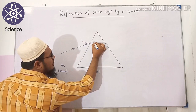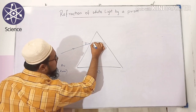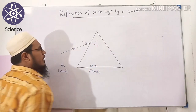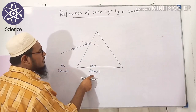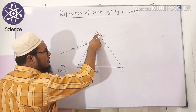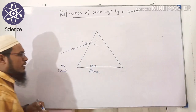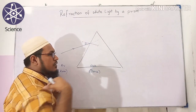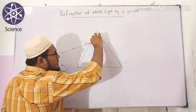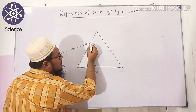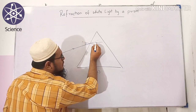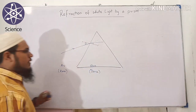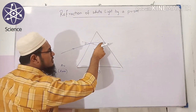If this layer were also air, the ray would have traveled directly without any deviation. But this is glass — a denser medium. From a rare medium to a denser medium, the ray moves towards the normal. So the ray bends towards the normal. The angle here is called the angle of refraction. That is the first surface of the prism.